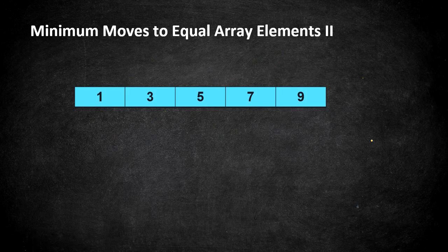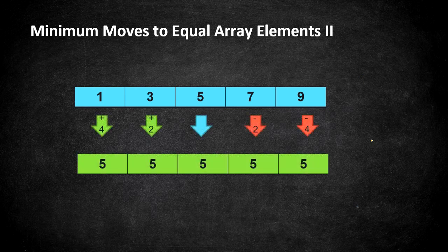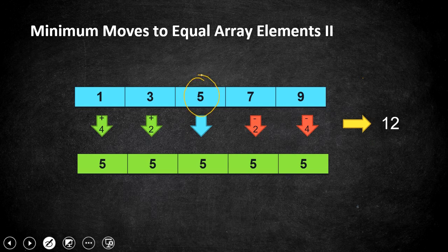Once we add and subtract values from both ends, all elements in this array become five, and the minimum number of moves to make this array equal is 12. The first step is to sort the array so we can identify the median value, and then bring all values equally to the median.